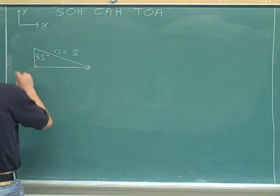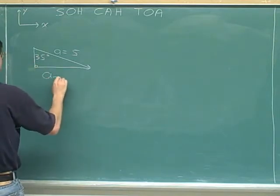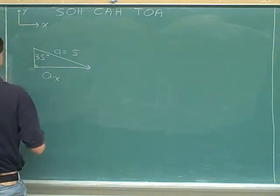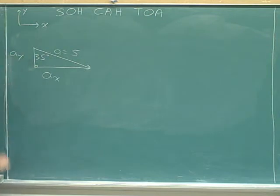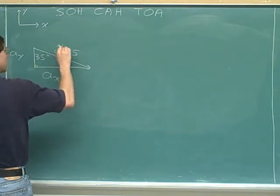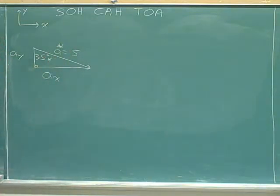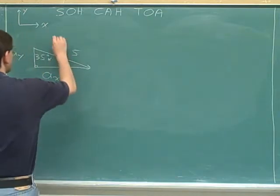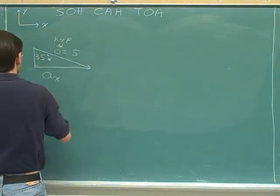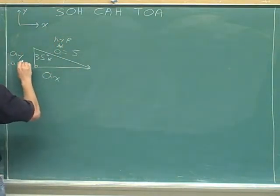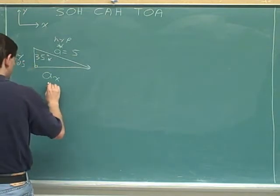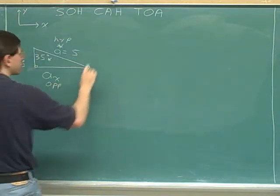Always label the signs. This is A sub X because it's parallel to the X axis. And this is A sub Y because this vertical side is parallel to the Y axis. Here's the sign we were given and the angle that we're focusing on. The vertical side is adjacent, and the horizontal side here is opposite.